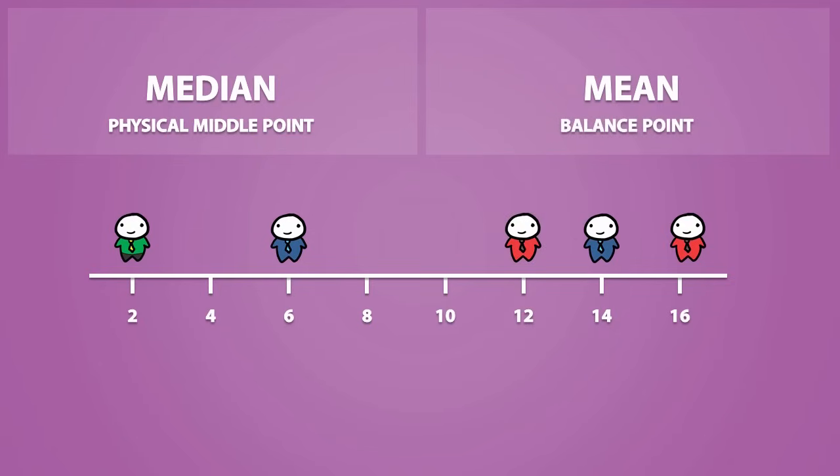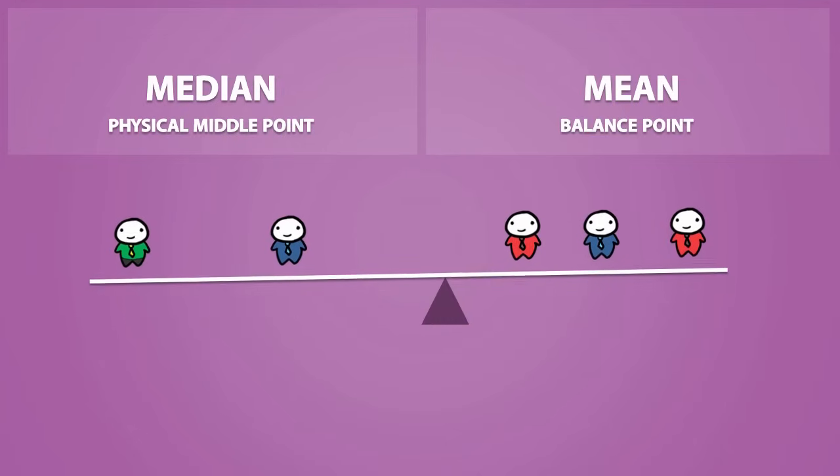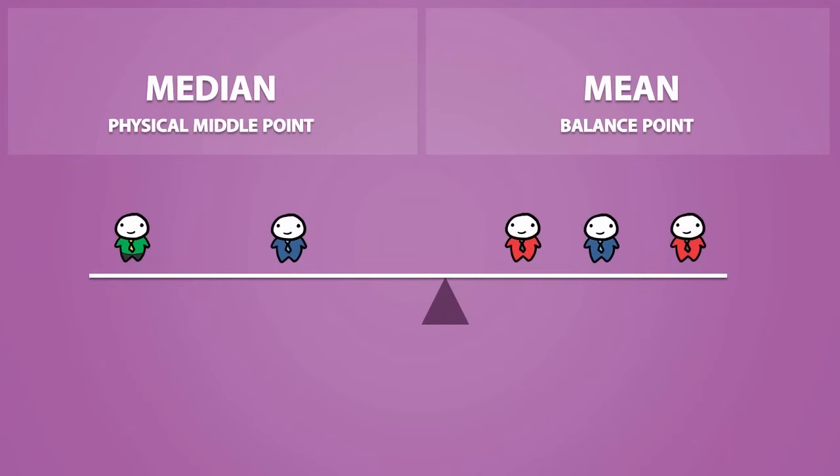Now the mean can be thought of as the balance point. If you calculate the mean for this dataset, you would get a value of 10. If these people were of equal weights, this is the position in which a seesaw would be balanced.